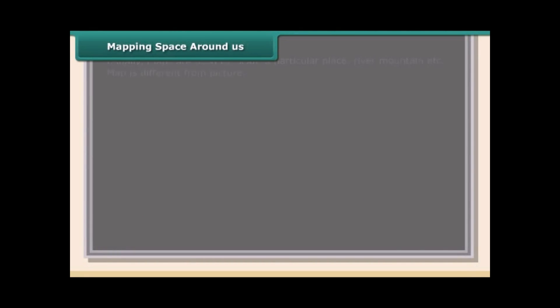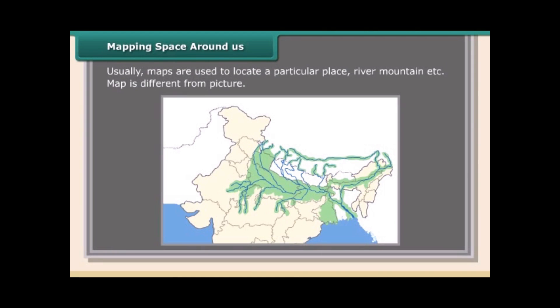Mapping space around us: Maps are usually used to locate a particular place such as a river or mountain. A map is different from a picture. This map is drawn by Radha, showing the route from her house to her uncle's house.